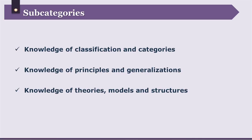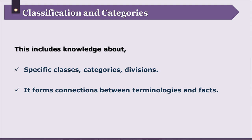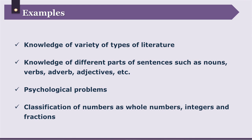Conceptual knowledge includes three subcategories: knowledge of classification and categories, knowledge of principles and generalizations, and knowledge of theories, models and structures. Knowledge of classification and categories includes knowledge about specific classes, categories, divisions, etc., and forms connections between terminologies and facts. Examples include knowledge of variety of types of literatures, parts of sentences, kinds of psychological problems, and classification of numbers as whole numbers, integers, and fractions.